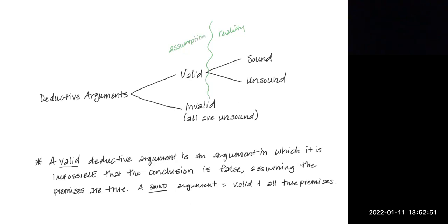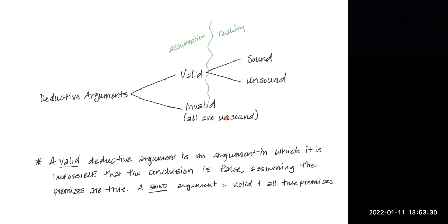To determine whether a deductive argument is valid or invalid, we begin by assuming the premises are true, and based on that assumption, we determine whether it's impossible that the conclusion is false. But after that, a valid deductive argument could be sound or unsound. If the premises are actually true in reality, the argument is sound. If they are not true in reality, it is unsound. And invalid deductive arguments are automatically unsound.